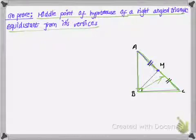M being the midpoint, we know that AM, the length of AM and MC, they should be equal since M is the midpoint.